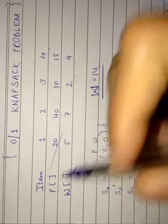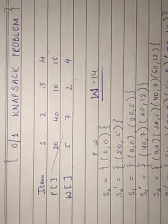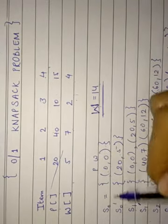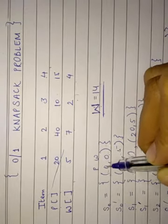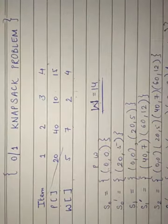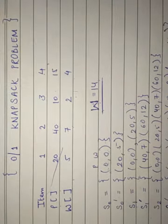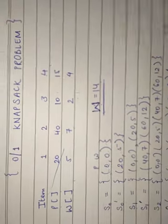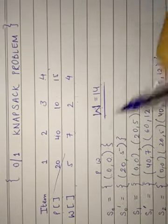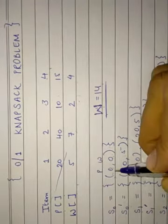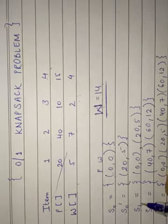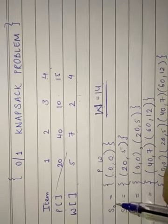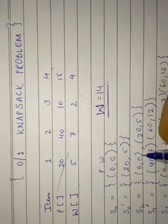In this example, the given capacity is 14 and the items are as shown. First we find S0 values — we simply write (0,0) as the first profit and weight. The first value in the bracket is the profit and the second is the weight. For finding S0-dash, we add the new element into S0 values. The first element is (20,5), so we add (20,5) and get (20,5). Next we find S1 by taking the union of S0 and S0-dash, giving us (0,0) and (20,5).